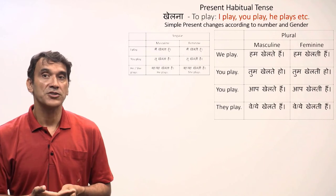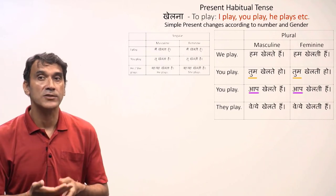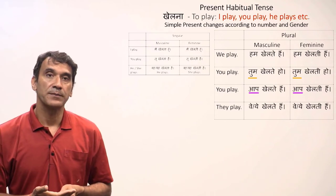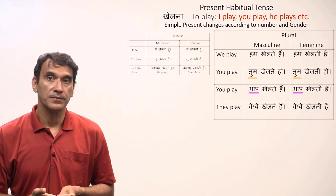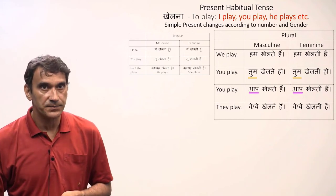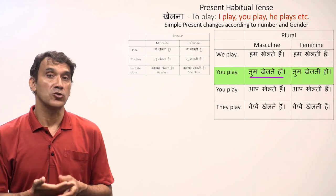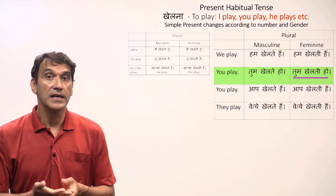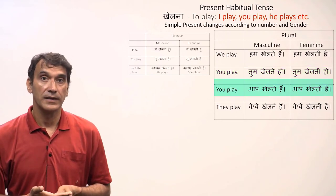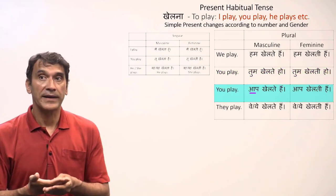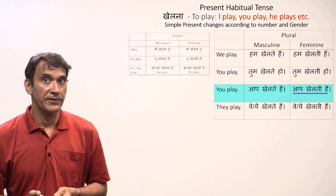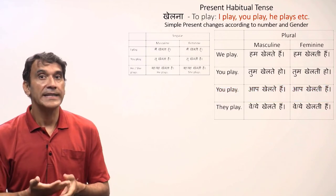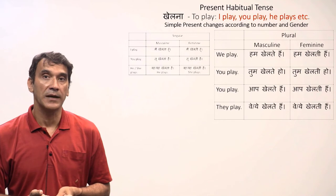Hindi has two forms for second person plural: 'tum' (informal but acceptable) and 'aap' (formal). You can use 'tum' with friends and close relatives. For 'tum,' the present habitual form is 'tum khailtay ho' for a masculine subject and 'tum khailti ho' for a feminine subject — meaning you play. For 'aap,' it is 'aap khailtay hain' for masculine and 'aap khailti hain' for feminine, again translated as you play.